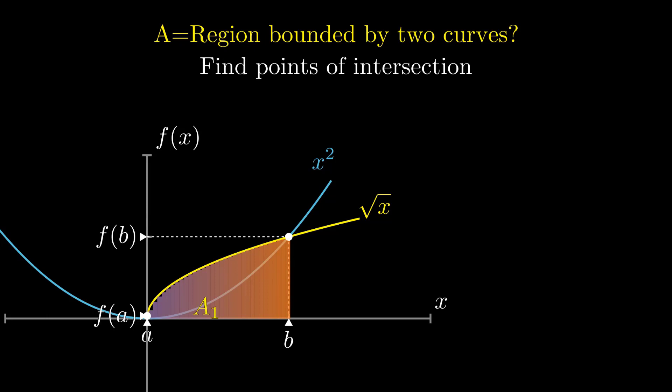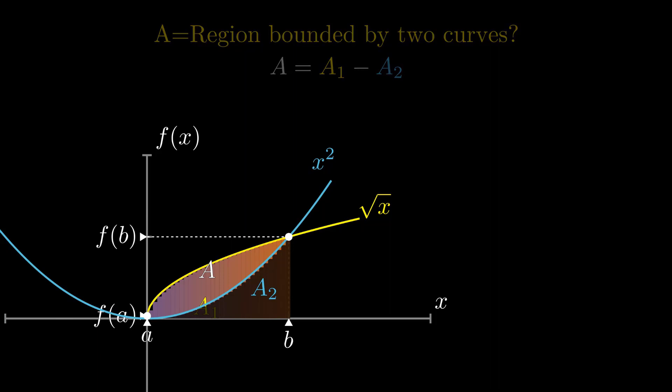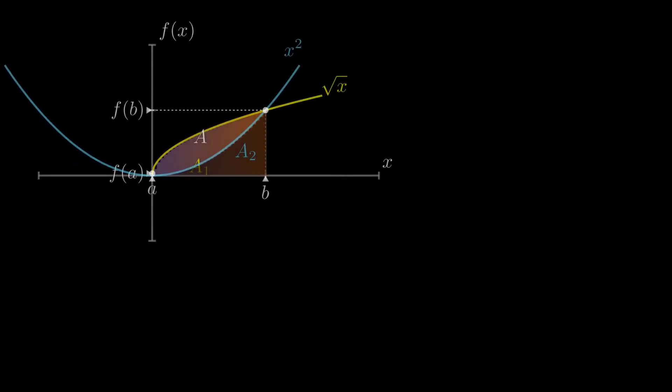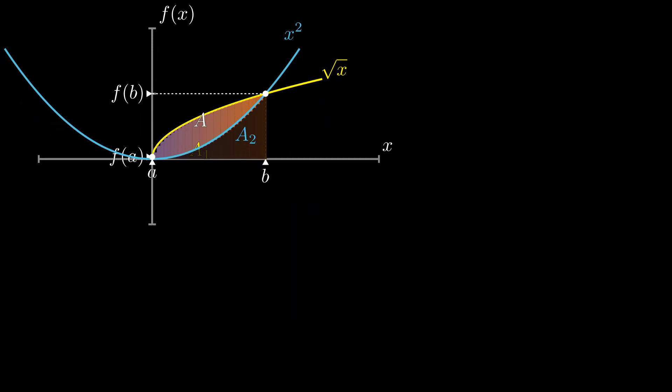Subtraction of these two areas will give us the area confined between the two curves. To find the intersections for the two curves, we have to solve this equation.